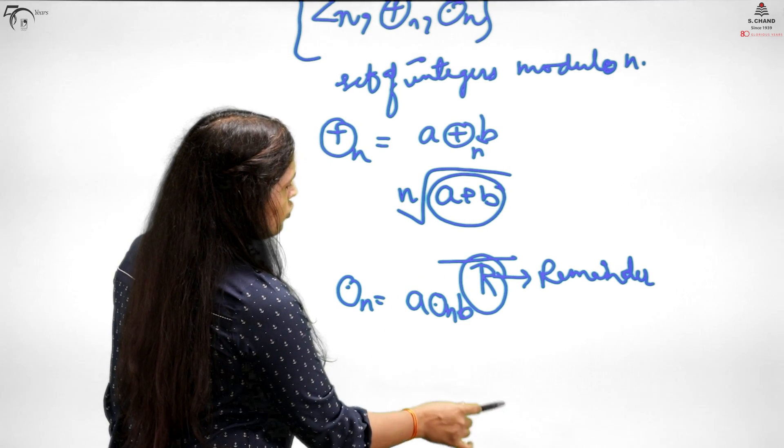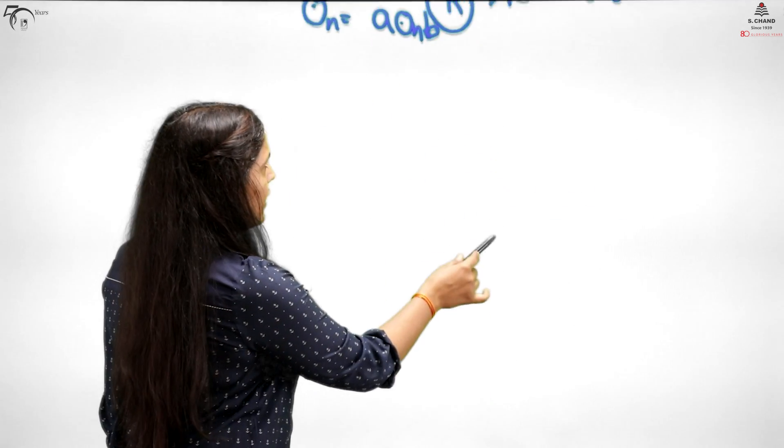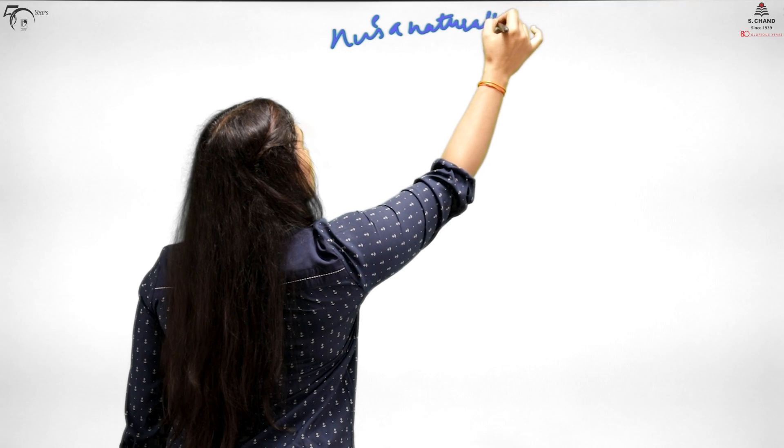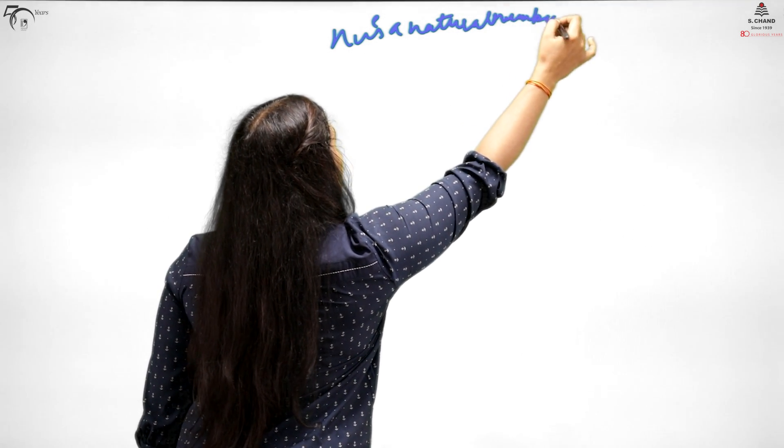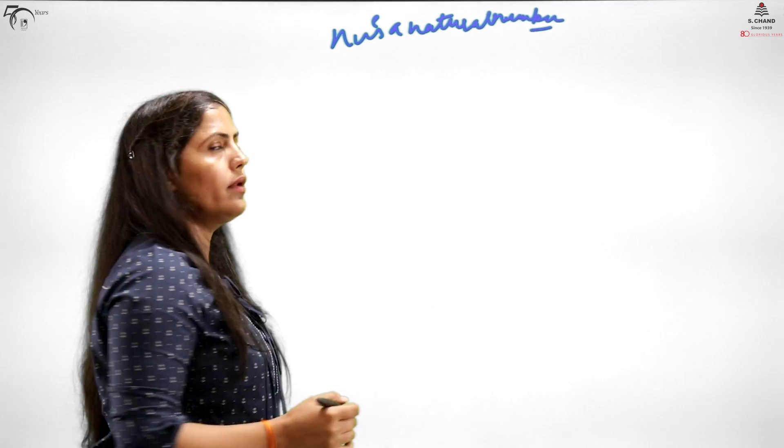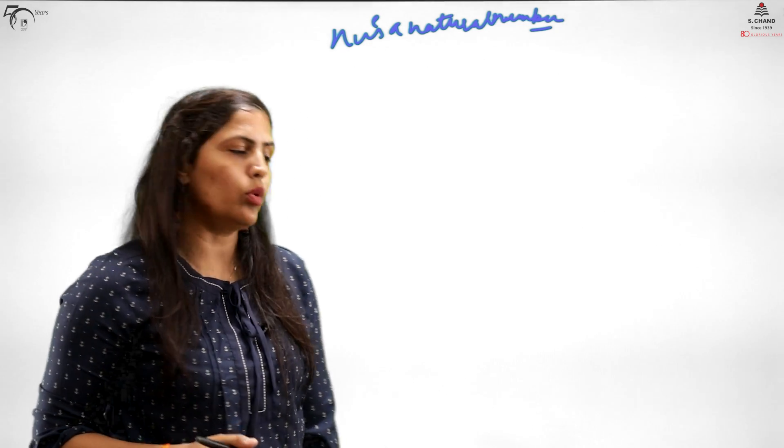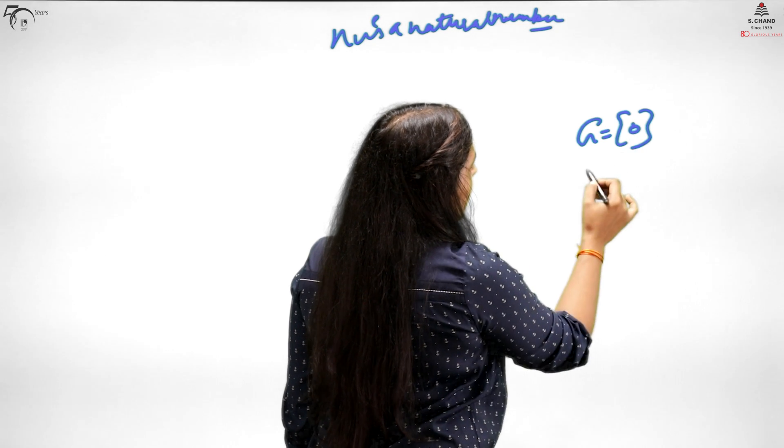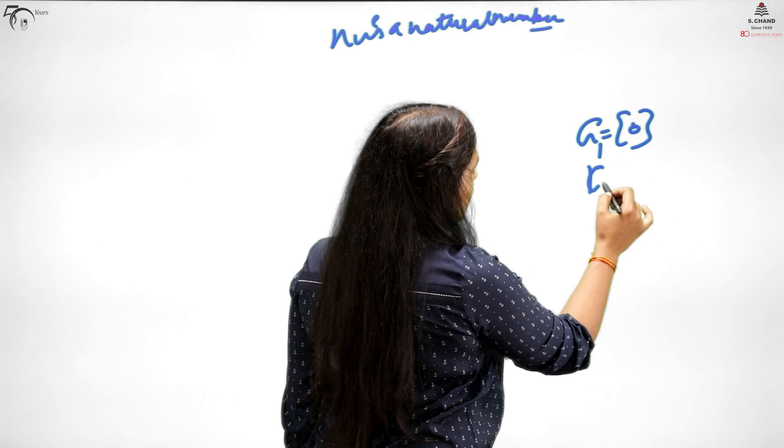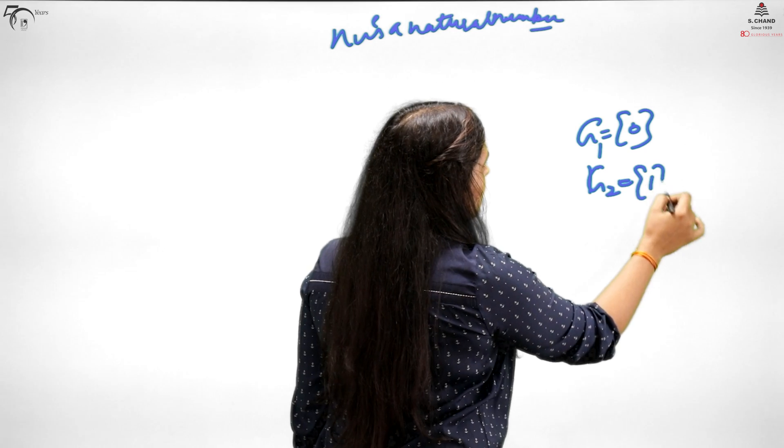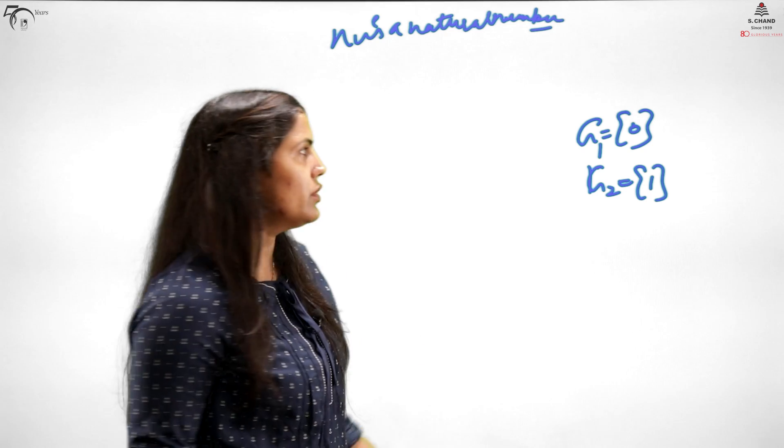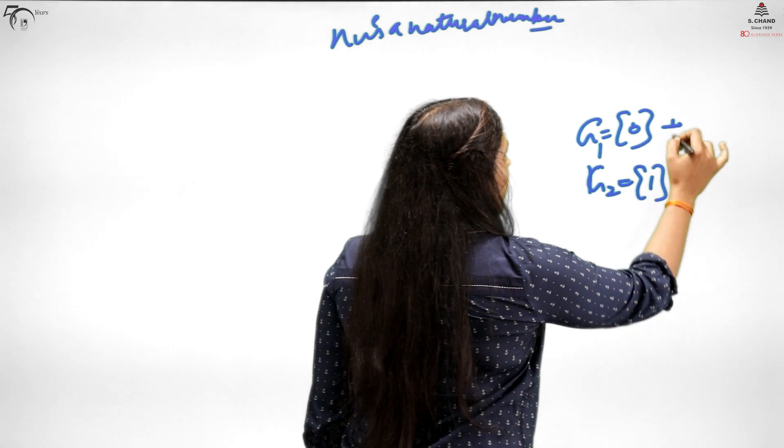N is a natural number. I just discussed that the smallest ring set is, if you remember from group theory, the smallest set with respect to plus is zero, and with respect to multiplication is one. In rings, the smallest ring is just zero. This is a ring with respect to plus and dot, because zero into zero is zero.